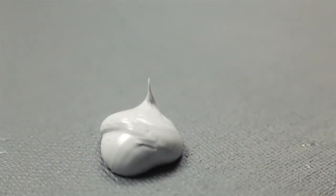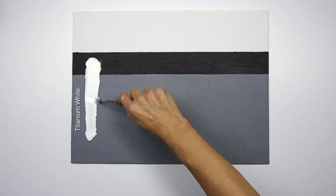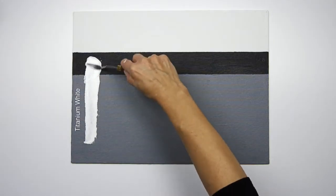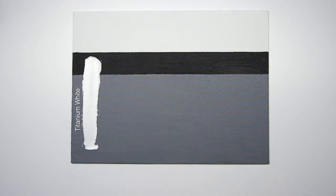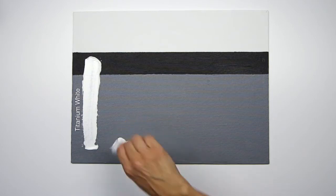So here's titanium white which is the most opaque white. You can see it allows very little of the undertone through and then here we have zinc white which